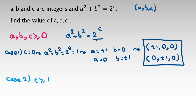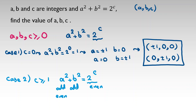Case two: c is at least one, so the right-hand side is even. For a squared plus b squared to be even, a and b must have the same parity — both odd or both even. If one were even and one odd, their sum of squares would be odd, contradicting the even right-hand side.